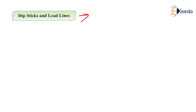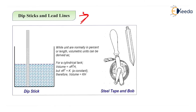The first measurement system we will look at is the dipstick and the lead line. As shown in the diagram, there is a tank full of liquid and a stick on which the marking levels are marked.